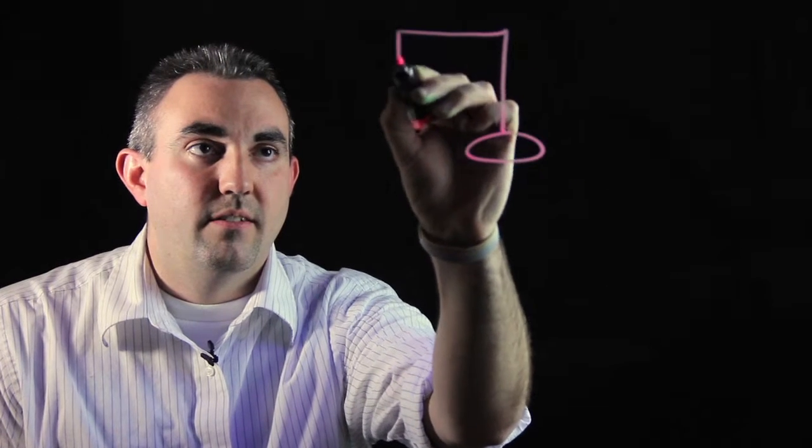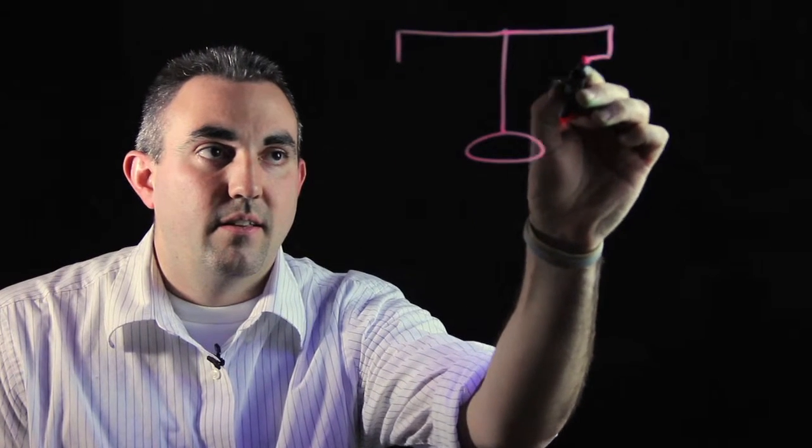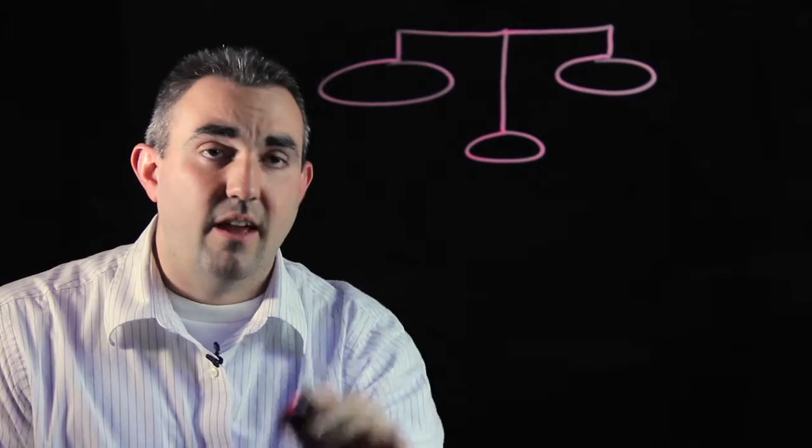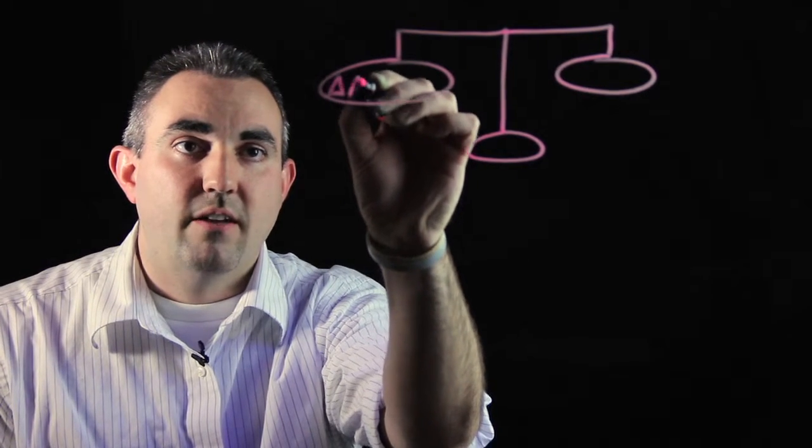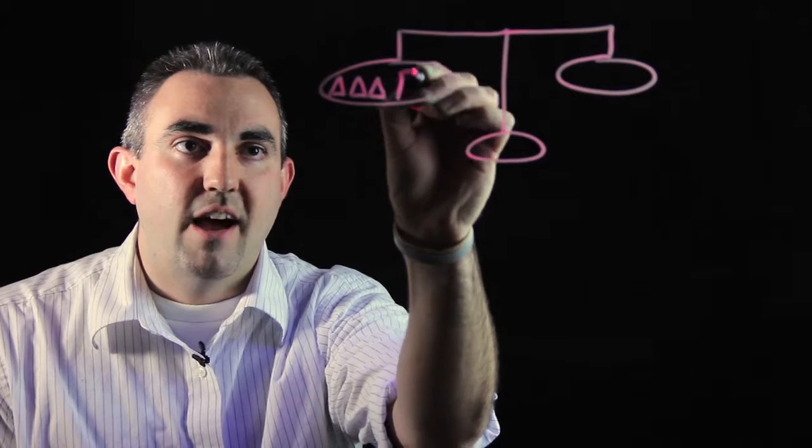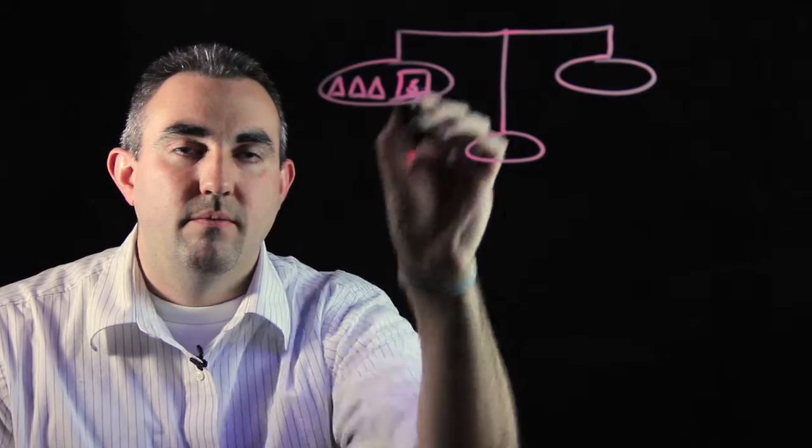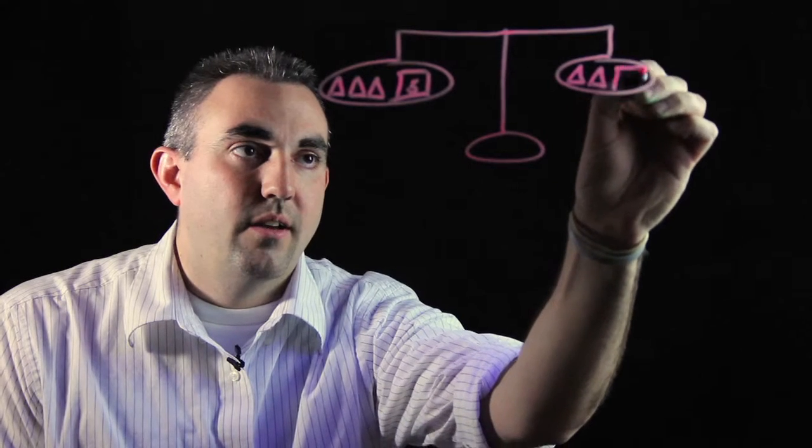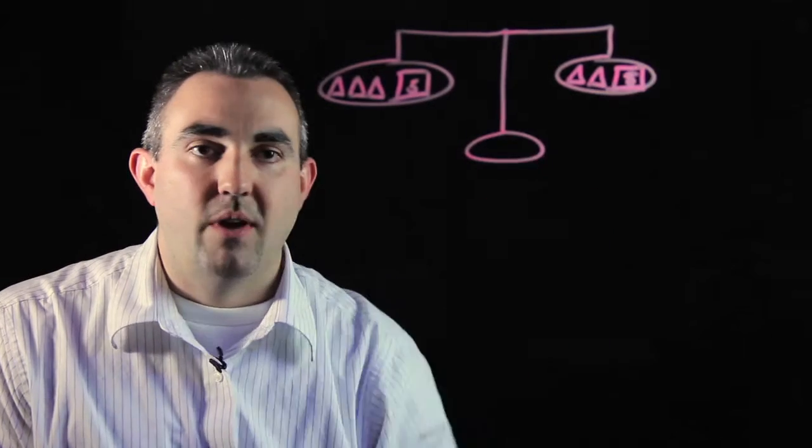First, here's a scale. The scale is balanced, and on the left side of the scale, we have three triangles and a five pound weight. On the right side of the scale, we have two triangles and an eight pound weight.